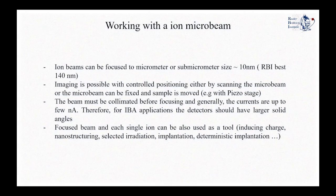One must bear in mind that in order to focus a beam and have such a small spot, the initial ion beam produced by the accelerator must first be collimated. As a result, the currents used in microbeams are limited, often up to a few nanoamperes. Therefore, for beam analysis applications, one should increase the solid angle and achieve a better yield of the gamma rays or protons being measured — the detector should have a bigger solid angle compared to what is used in a conventional beam.